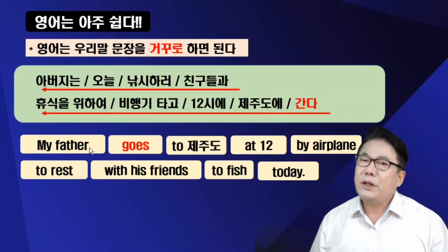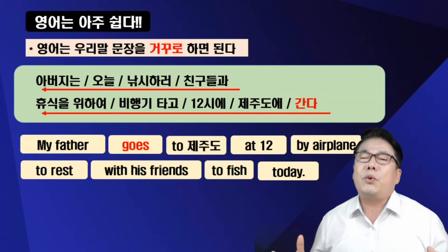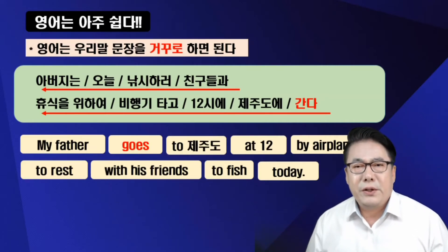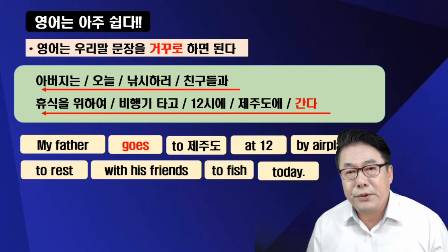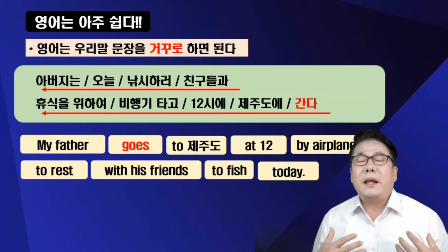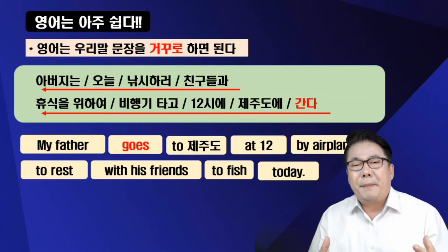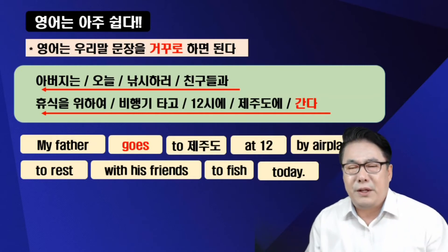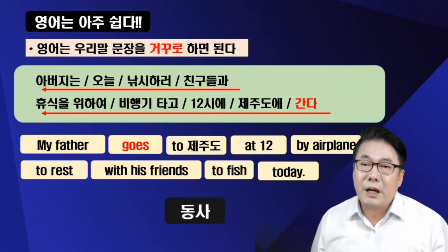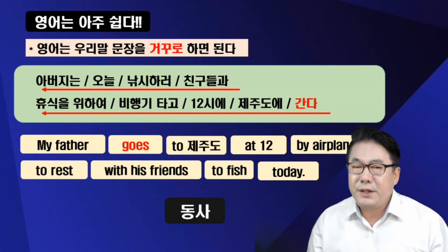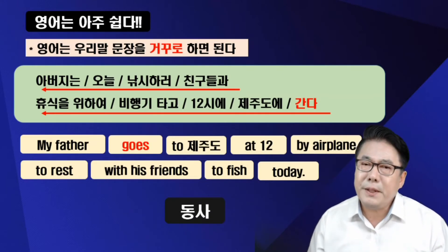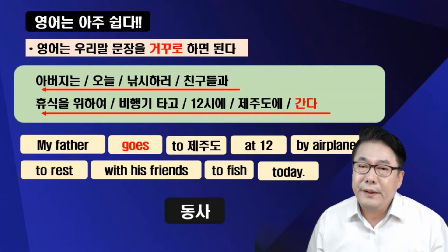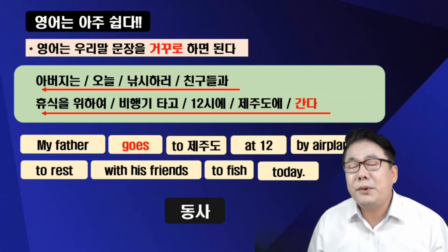우리들은 이미 다 학습이 된 겁니다. 절대영어는 새삼스러운 학습이 필요 없는 겁니다. 여러분들께 이미 내재되어 있는 걸 그냥 받아들이고 정리해서 입으로 말하는 연습을 하면 되는 겁니다. 그래서 우리가 잡을 게 뭐예요? 동사만 잡으면 되는 겁니다. 동사만 잡자.